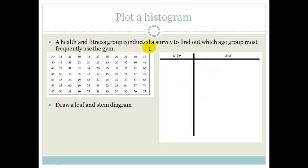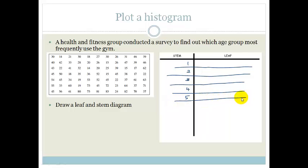Now, let's make one. It says a health and fitness group conducted a survey to find out which age group most frequently uses the gym. So we're going to start off with a stem and leaf diagram. And we're going to start by writing 1, 2, 3, 4, 5, 6, 7, 8, and 9. Now, this stem is basically your first number of your decimal. So for example, 1 stands for every number from 10 through to 19, 2 stands for every number between 20 and 29, 30 and 39, and so on.